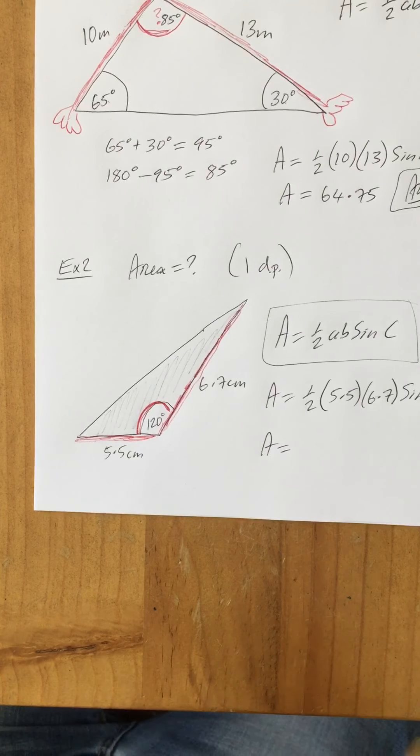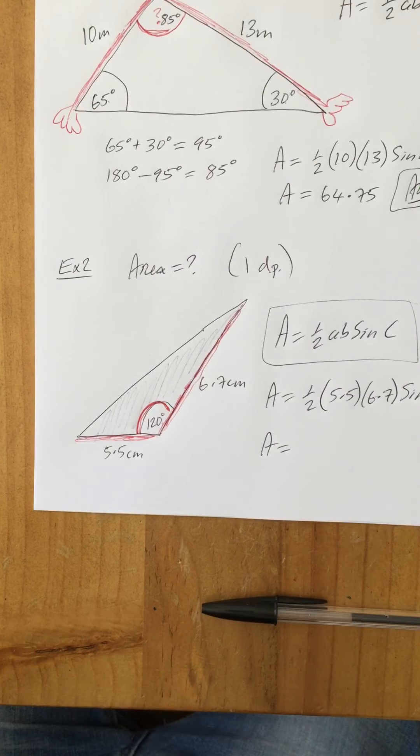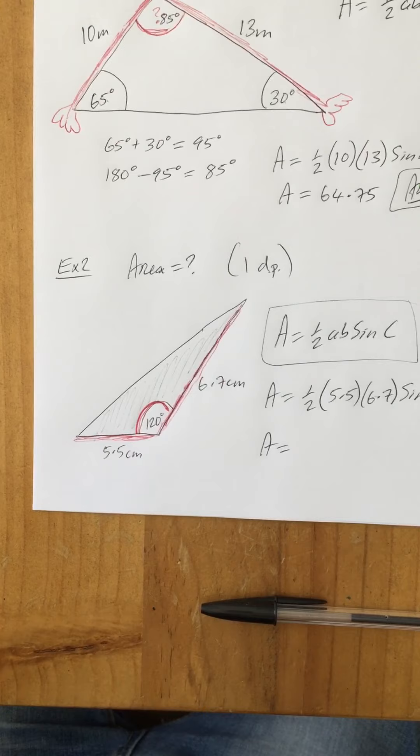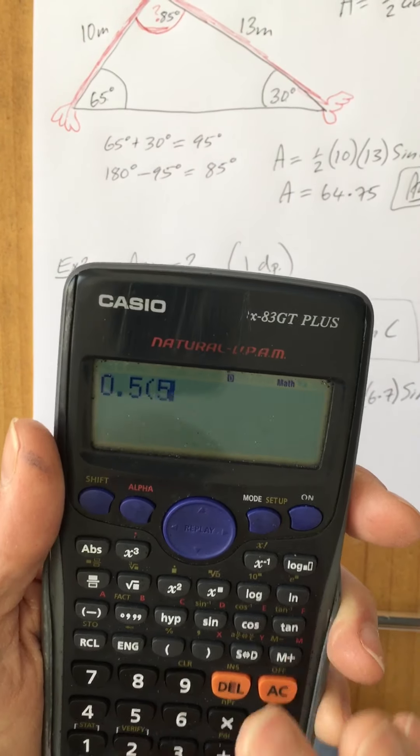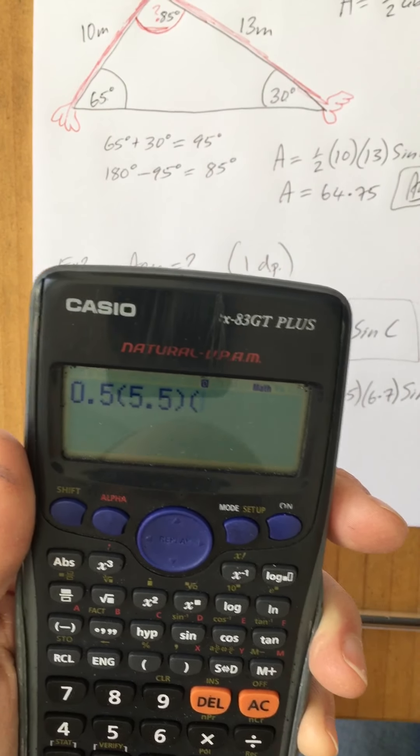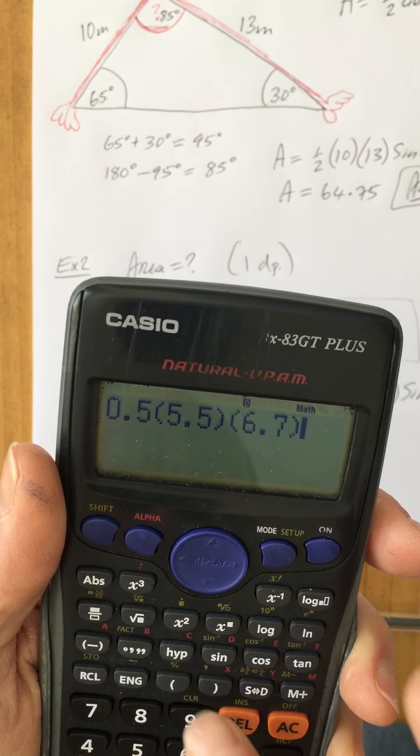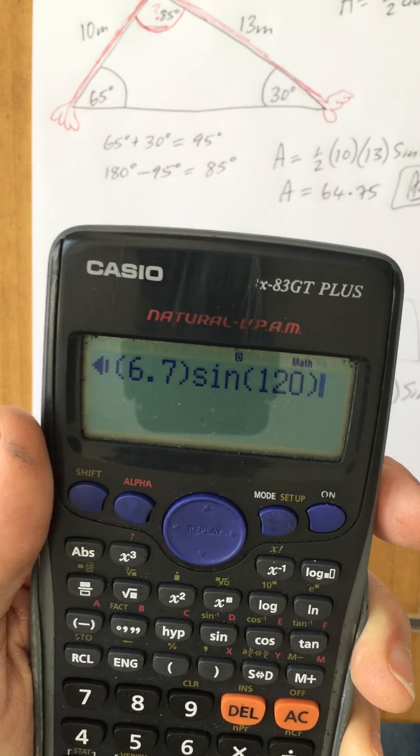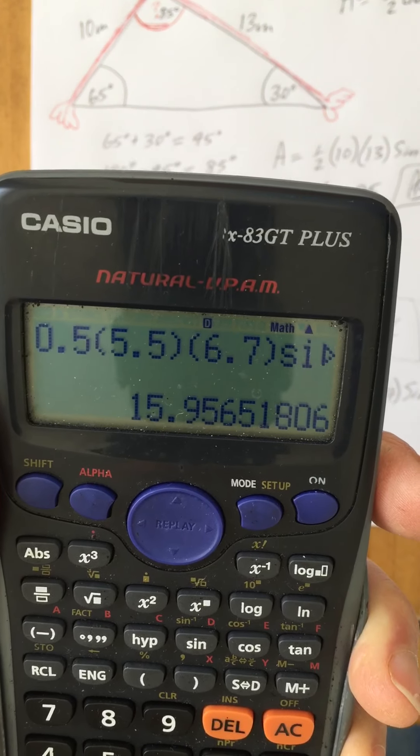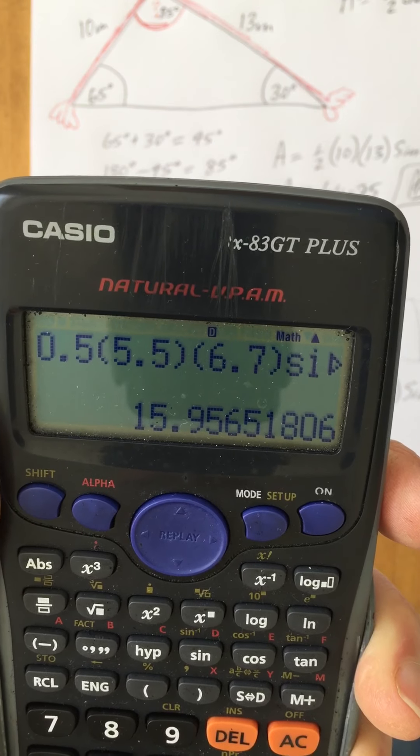So we're going to put 0.5 multiplied by 5.5 multiplied by 6.7 multiplied by sine 120 degrees and press equals, and up comes 15.956.